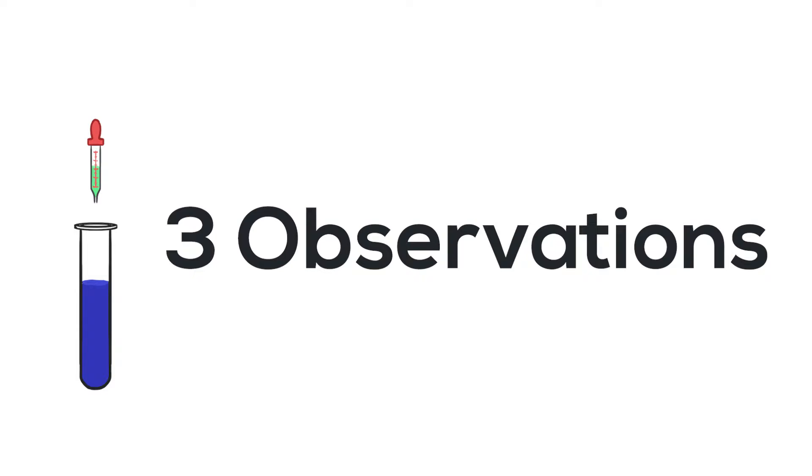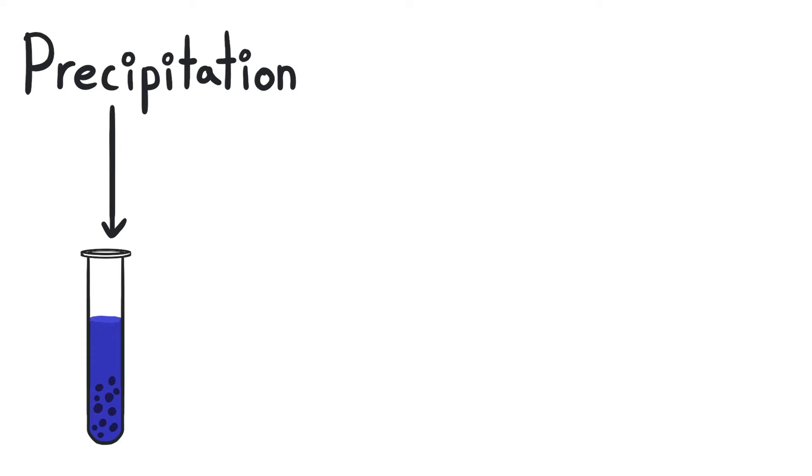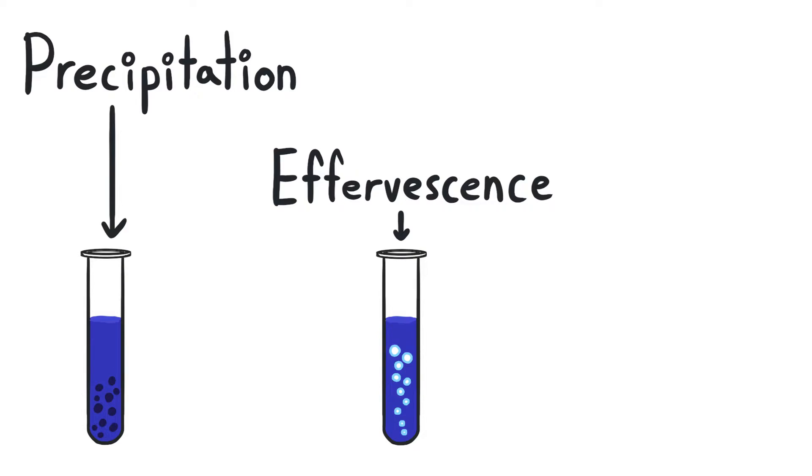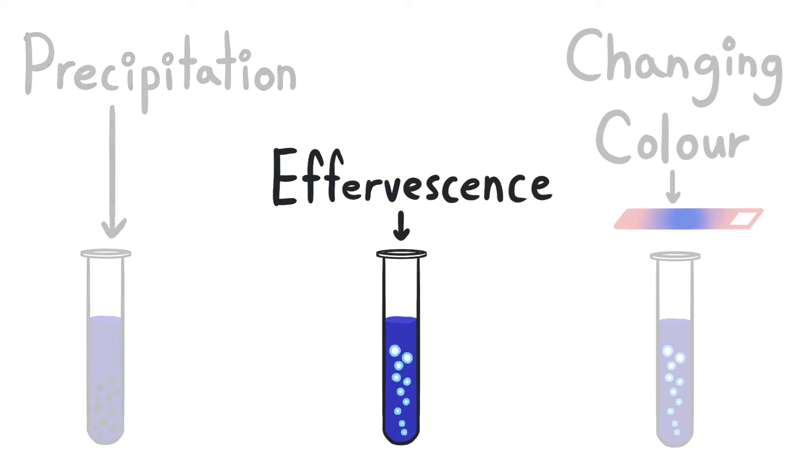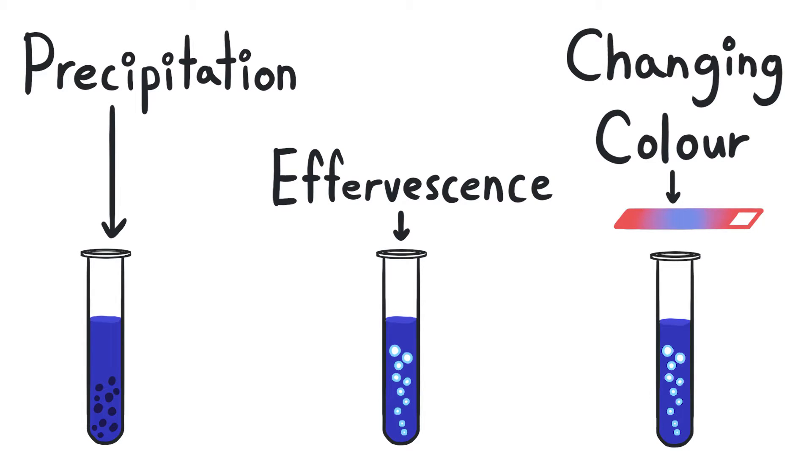To test for anions, we will be adding testing chemicals and record the observations. There are three main types of observations we need to take note of for this test, which are forming of precipitates, bubbles of gas also known as effervescence, and changes of color, for example, litmus paper tests. Depending on the observations we make, we will be able to identify the anion component of the sample.